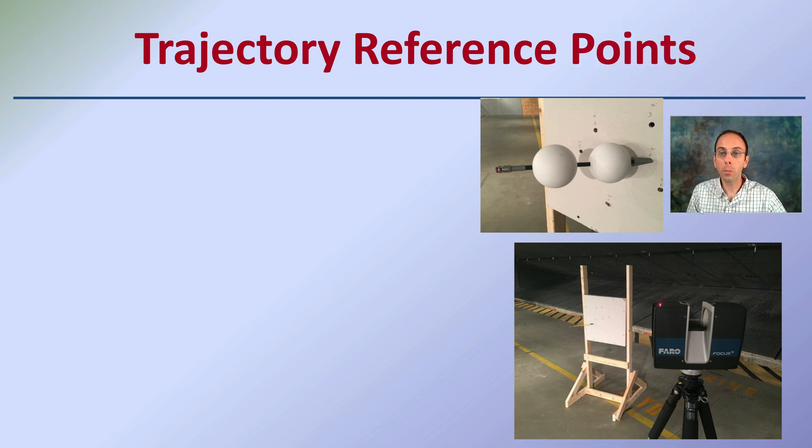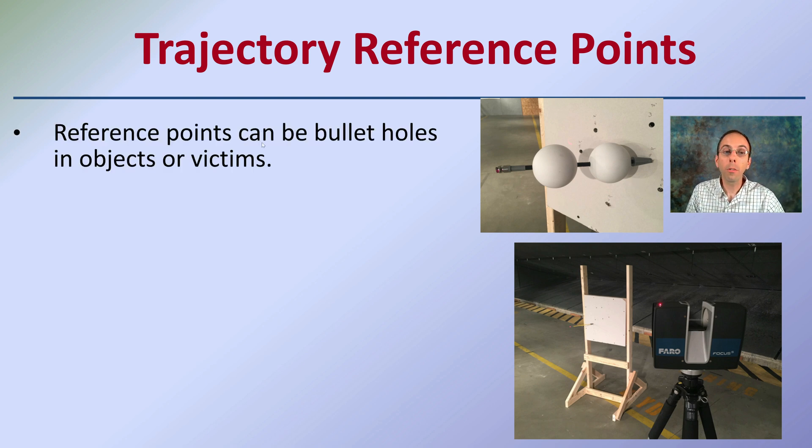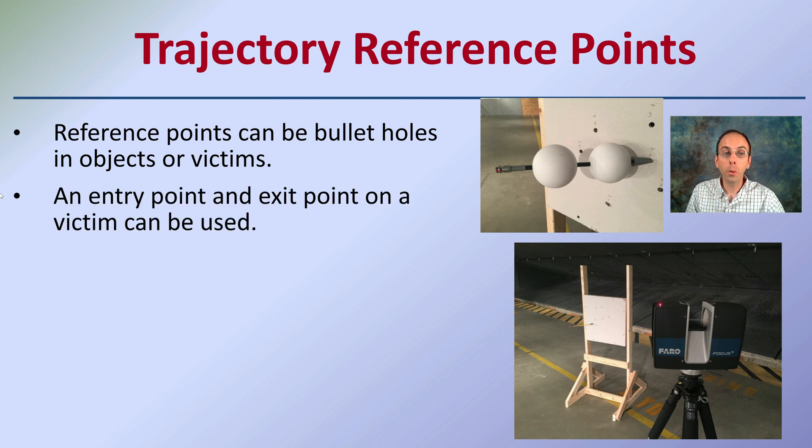Now how do you go about getting those points? Well, if you look at the way that the hole is made and you can develop a line, that is a great way to get those two reference points, especially if it passes through two areas. These reference points can be bullet holes in the object or the victim, and the entry point or exit point from the victim can be used. So if it came in one way and went out the other way, those again can be two points. If it came in the windshield and impacted the person, those can be also considered two points.